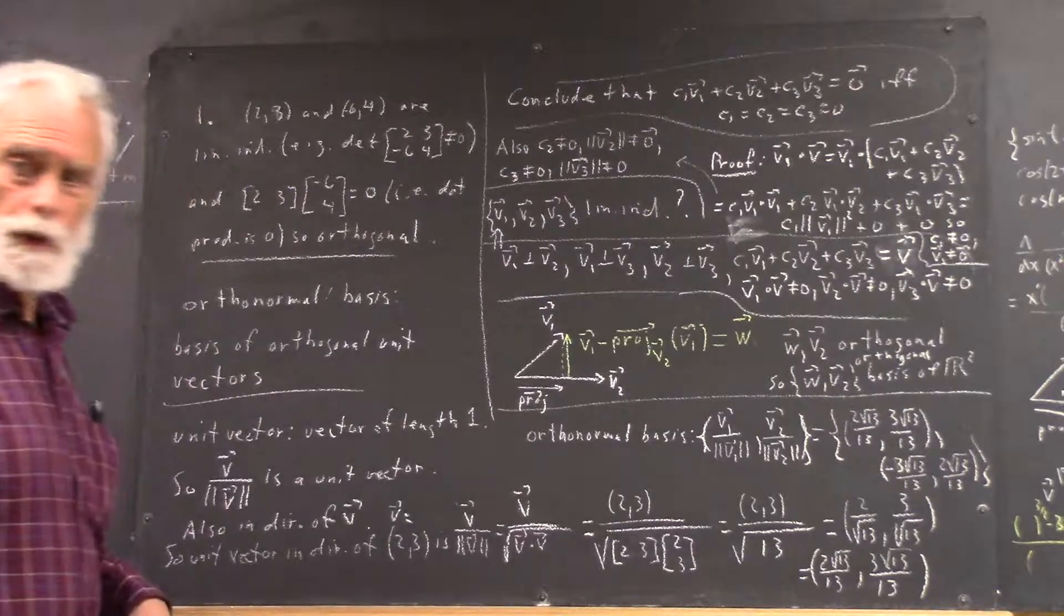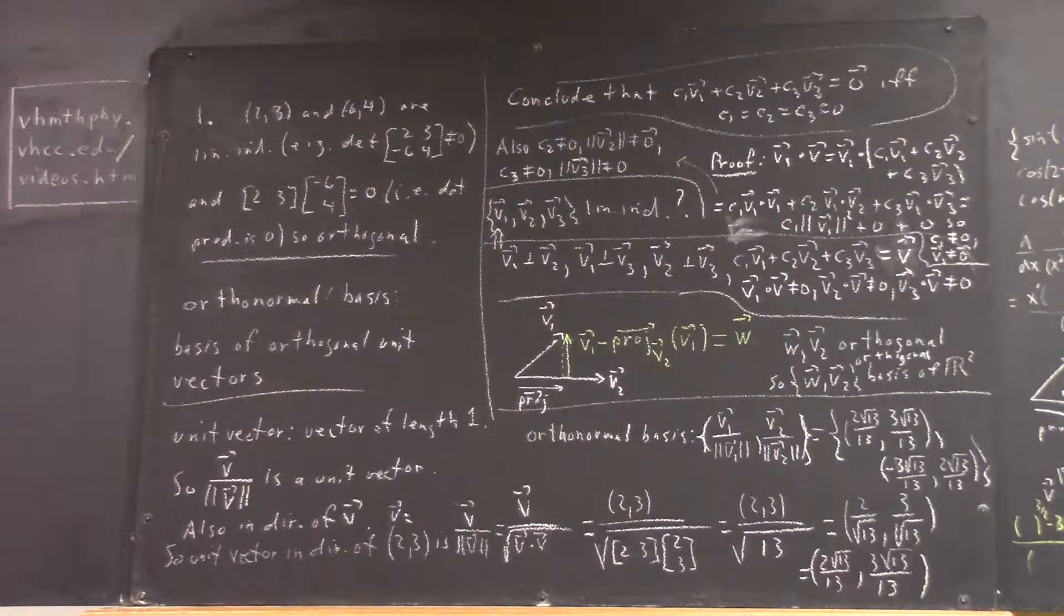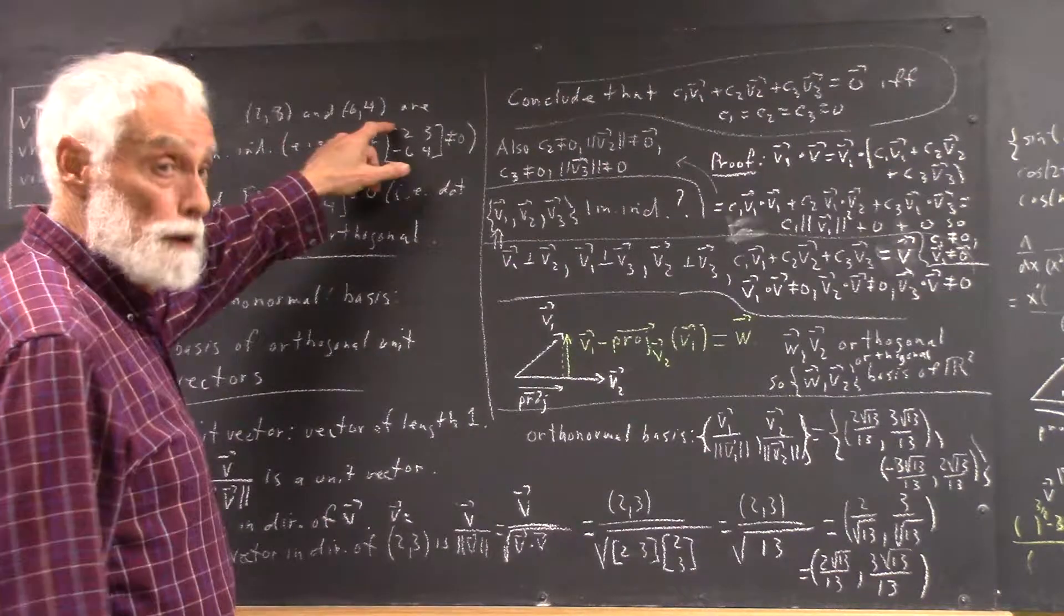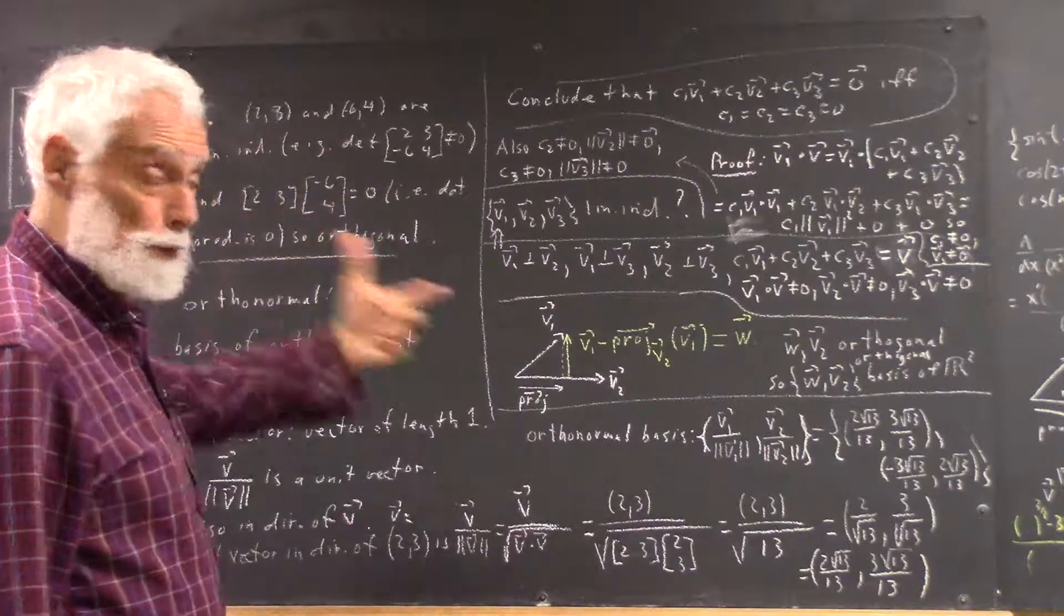Okay, we observe that the vectors (1, 3) and (-6, 4) are linearly independent. This one is certainly not a multiple of this one, and these are vectors in R2.